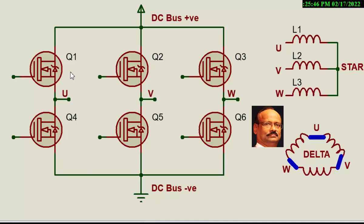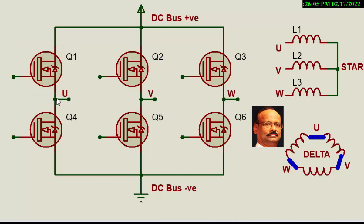Let us try to understand how it works — how it converts from DC to AC. We have the DC supply positive and negative here. When this is given a positive pulse, the gate is triggered with respect to the source. The triggering takes place between this point and this point, and in the process, this will switch on. That means the DC current will start flowing from here and it reaches U.